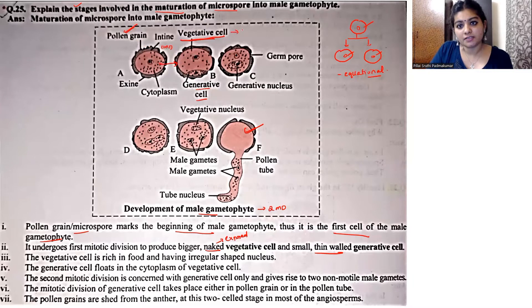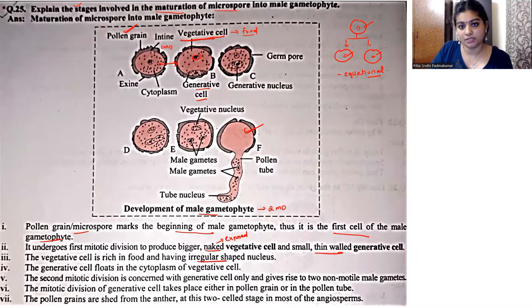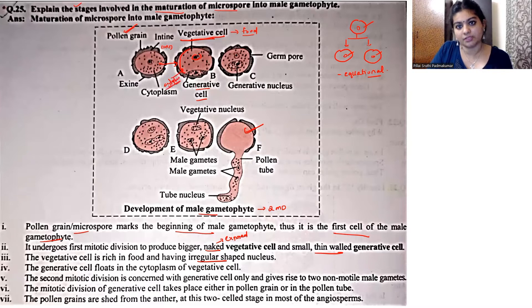Vegetative cell कैसा है — it is rich in food, और इसके पास जो nucleus होता है, वो irregularly shaped होता है. और जो generative cell है, यह vegetative cell के cytoplasm में float होता है — तो generative cell, vegetative cell के ही cytoplasm में float हो रहा है.